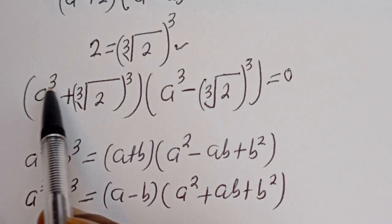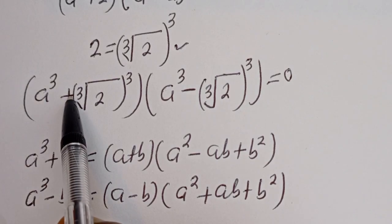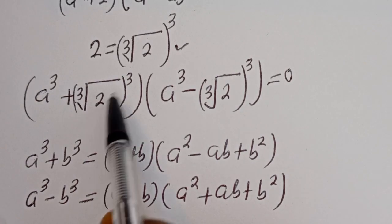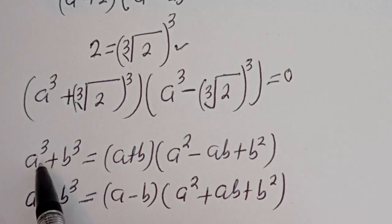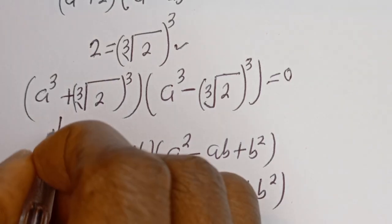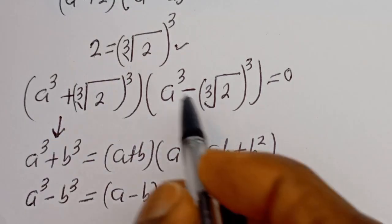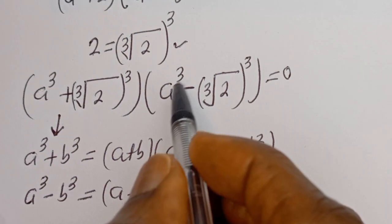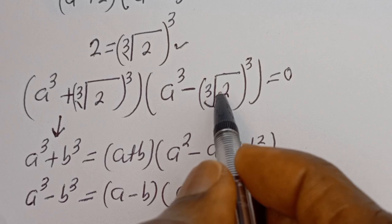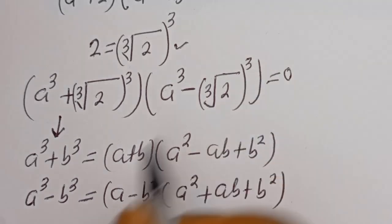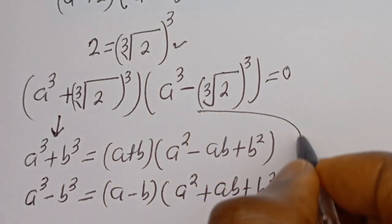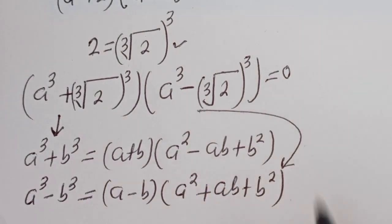Now here we have a to the power of three plus cube root of two to the power of three, so it is going to use the sum of cubes formula. And we have a to the power of three minus cube root of two to the power of three, so this is going to use the difference of cubes formula.